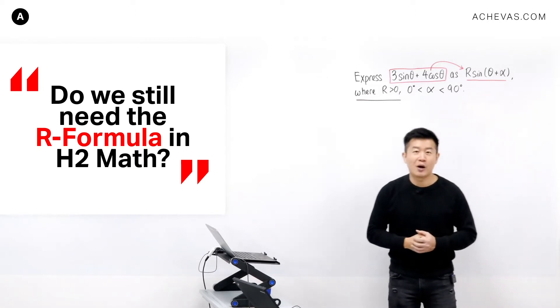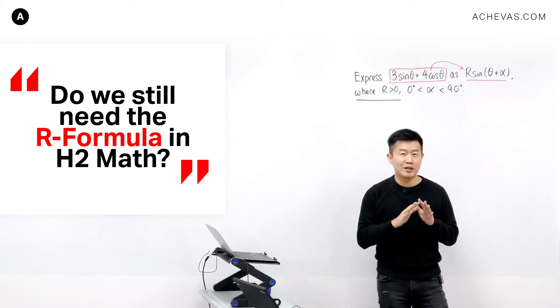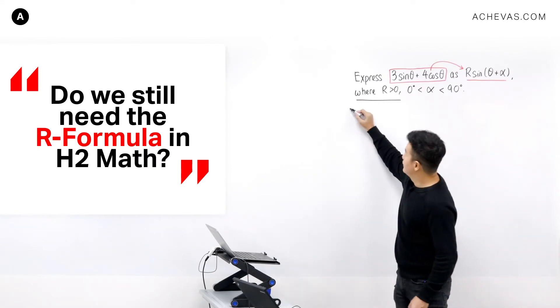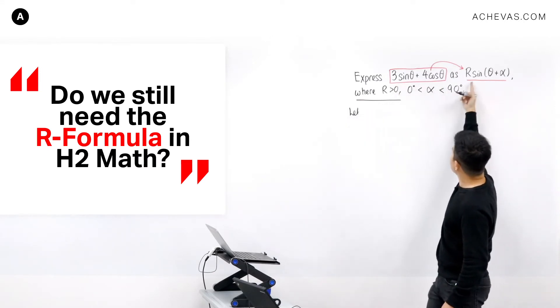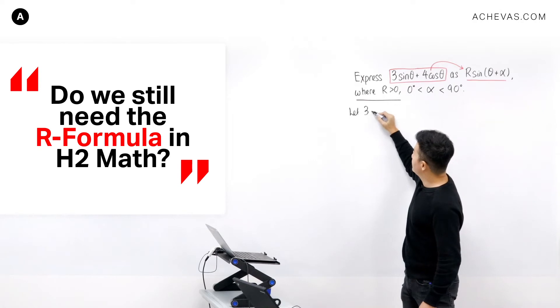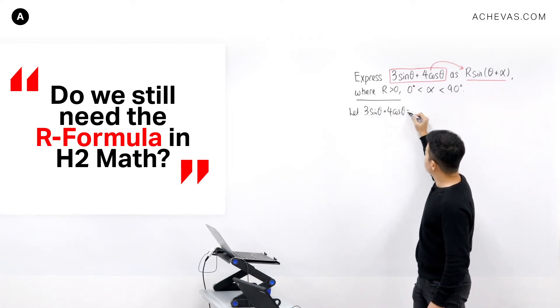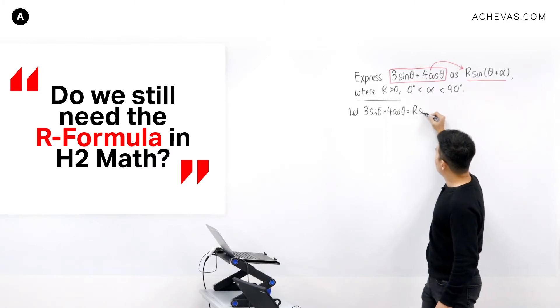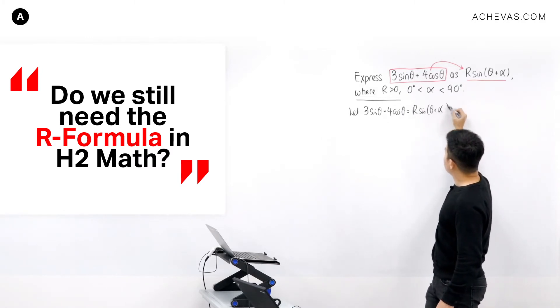Let's take a look at how R-formula can be derived. And it is actually a very, very simple process. First, we are going to let this be equal to this. So we'll be letting 3 sine theta plus 4 cosine theta be equal to R sine of theta plus alpha.